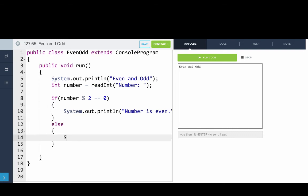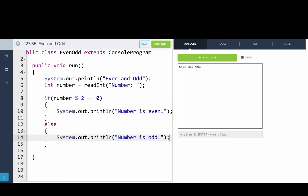Else, we'll print line, number is odd. Okay, so let's run this and see what happens. So I'll type in 10, and hit enter, and that should be even. And we get the right answer.